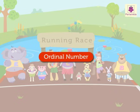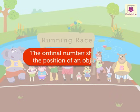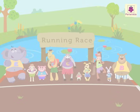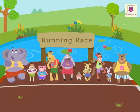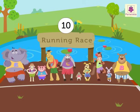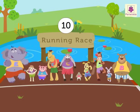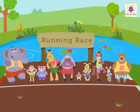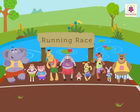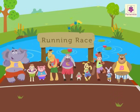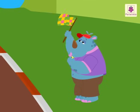What do you mean by an ordinal number? The ordinal number shows the position of an object. Let's learn about ordinal numbers. There are 10 animals living near this pond. They have organized a running race today. All of them are standing at the start position. The race begins!